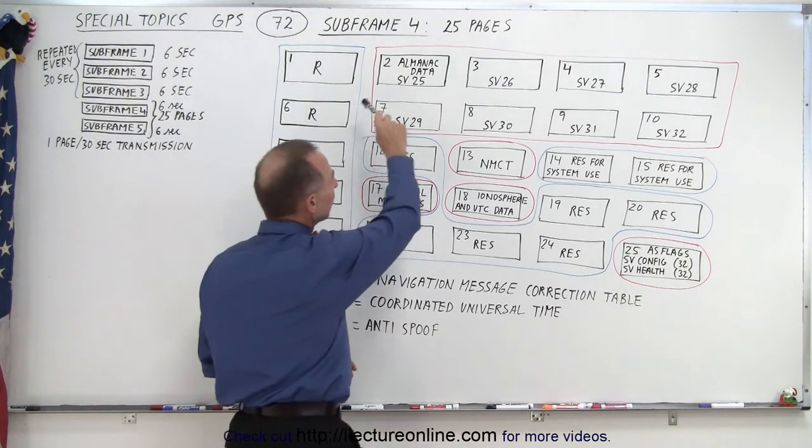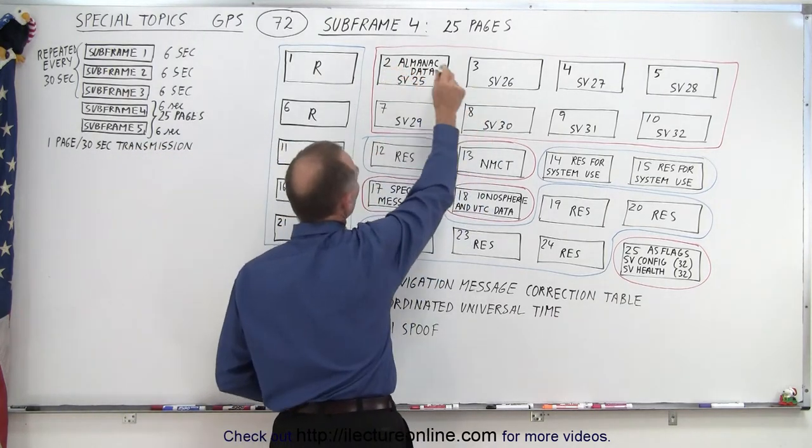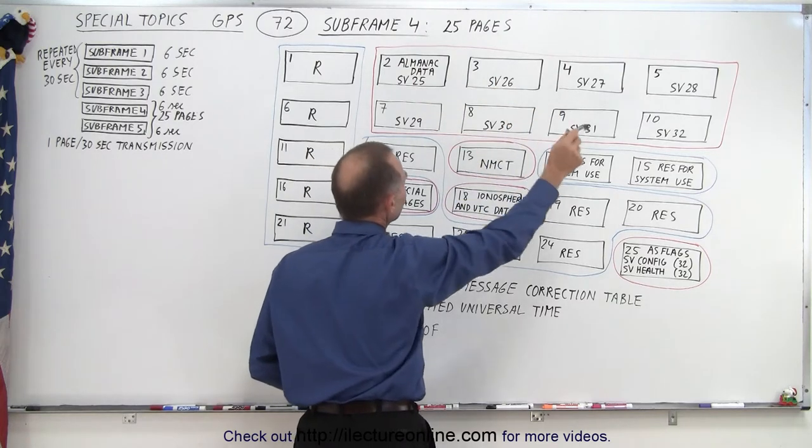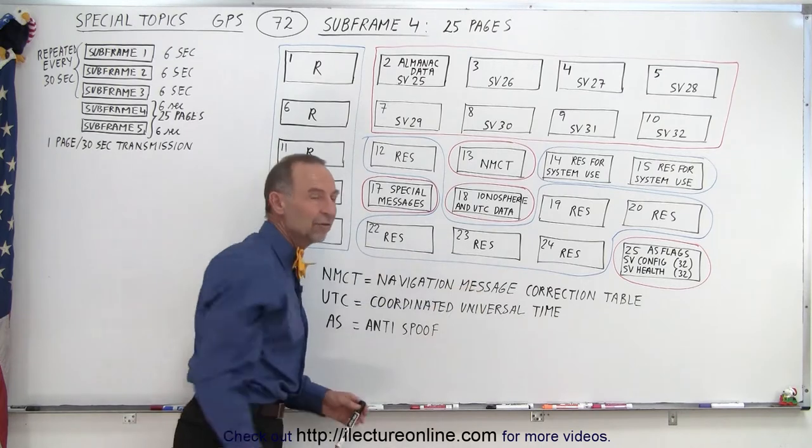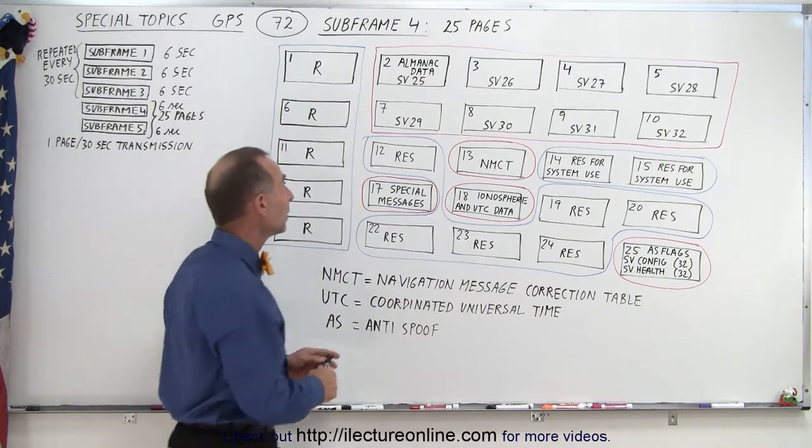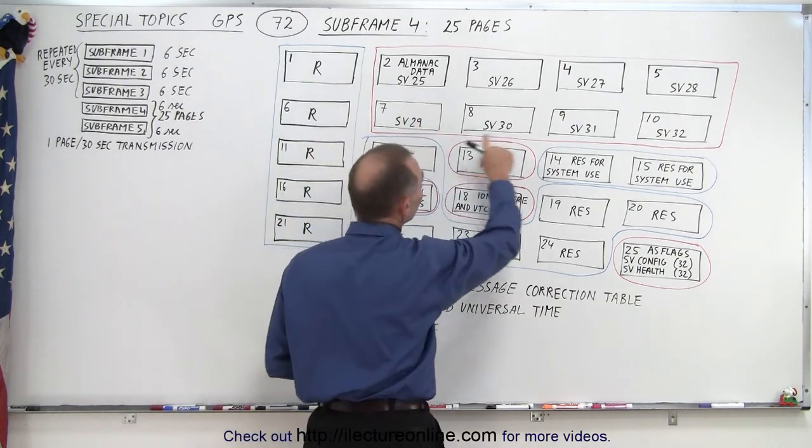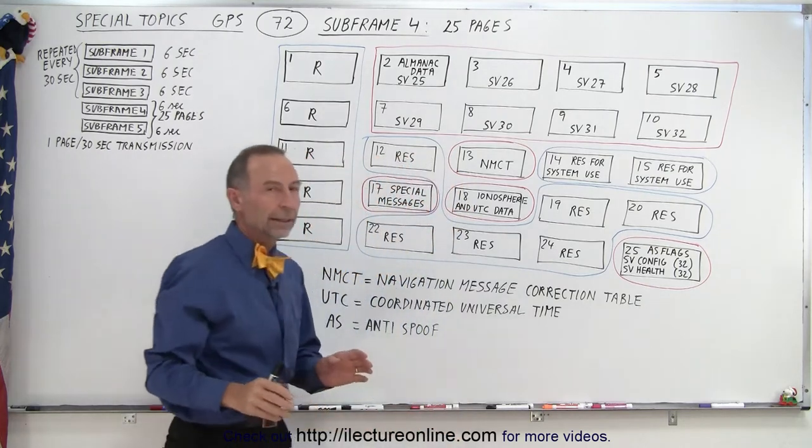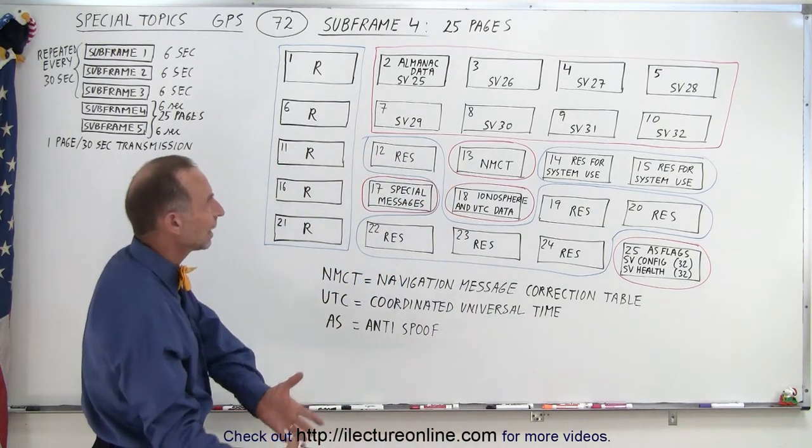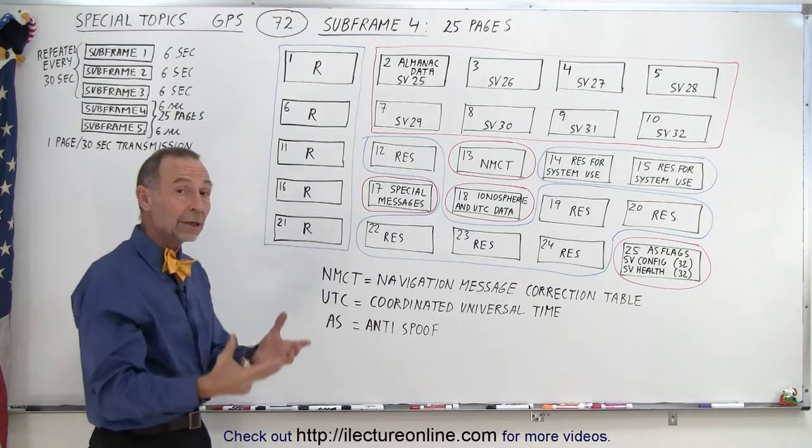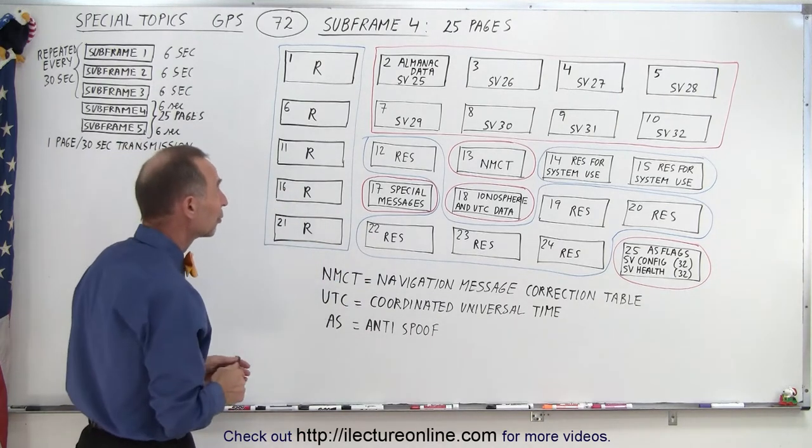Now the first 8, page 2, 3, 4, 5, 7, 8, 9, and 10, contain the almanac data of 8 SVs, of 8 space vehicles, namely space vehicle 25 through 32. The other 24 space vehicle almanac data is contained in subframe 5 and so we'll take a look at that in the near future.